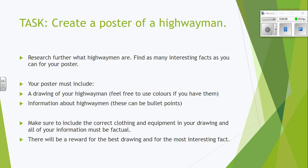Your poster must include a drawing of your highwayman — you might want to put that in the middle of your page. Feel free to use as many colours as you want. Make sure it's realistic, because we know highwaymen wore quite dark and dingy colours. I also want some information about highwaymen on your poster. These can be bullet points or paragraphs — it's entirely up to you. You might want to do an image in the middle with lines coming off giving information. Make sure you include all the correct clothing and equipment in your drawing, and all the information must be factual. Don't write something that isn't true — make sure we've got actual facts.